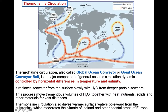Here we're looking at a two-dimensional projection of the Earth showing the global ocean conveyor system, or the global ocean conveyor belt — we also call that the thermohaline circulation. The word 'thermo' relates to temperatures, and 'haline' relates to salt content of ocean water. Collectively, thermohaline circulation means circulation patterns driven by temperature changes and salinity changes in ocean water.